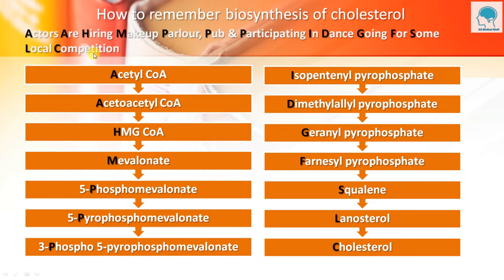Here, the first A stands for Acetyl CoA, the second A stands for Acetoacetyl CoA, H stands for HMG CoA (that is Beta-Hydroxy Beta-Methylglutaryl CoA), M stands for Mevalonate, and the first P stands for 5-Phospho Mevalonate.